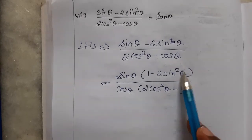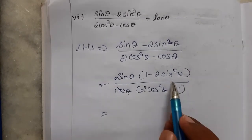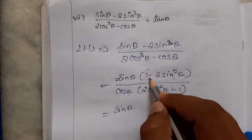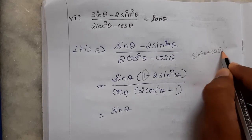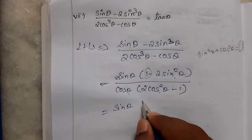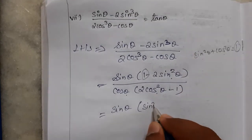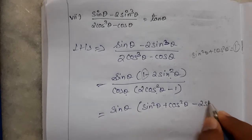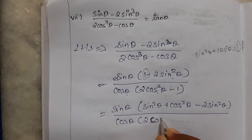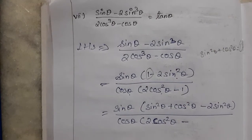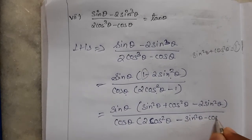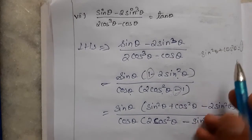Now we have to cancel the bracket terms in numerator and denominator, but 1 minus 2 sin squared theta and 2 cos squared theta minus 1 look different. However, substituting 1 as sin squared theta plus cos squared theta, the numerator bracket becomes sin squared theta plus cos squared theta minus 2 sin squared theta, and in denominator 2 cos squared theta minus sin squared theta minus cos squared theta.